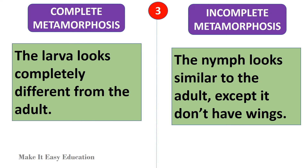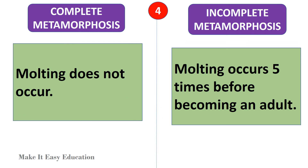In complete metamorphosis, the larva looks completely different from the adult. In incomplete metamorphosis, the nymph looks similar to the adult, except it doesn't have wings. In complete metamorphosis, molting does not occur. In incomplete metamorphosis, molting occurs five times before becoming an adult.